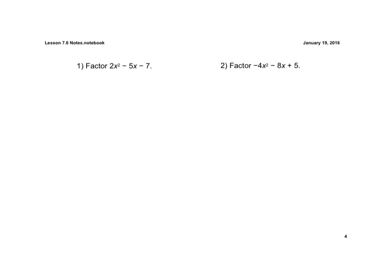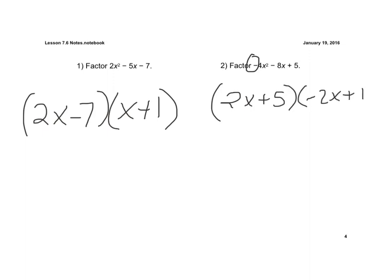The answers to number 1 would be 2x minus 7 times x plus 1. And the answer to number 2, there's a couple of different ways to do it. But if you didn't worry about the negative out in front and you just left it, then you'd have 2x plus 5 times negative 2x plus 1. So thank you very much.